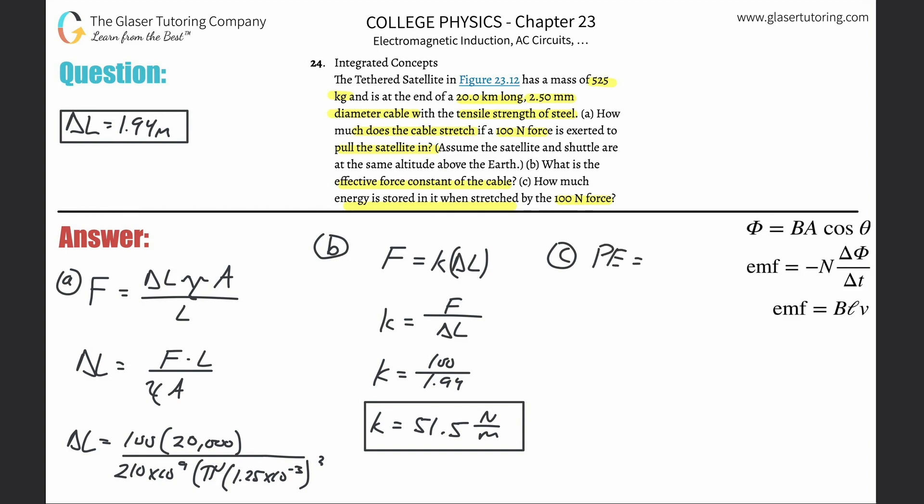What we now need to do is use the potential energy formula. We're thinking about how does it relate to this stretchiness of the spring or of a material? You can think about it like a spring also. So this is one half times the force constant multiplied then by the change in length or change in x, but I'm calling it L, squared.